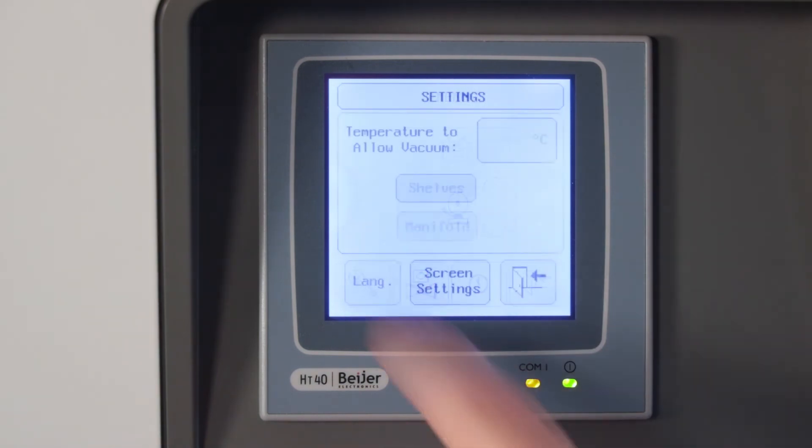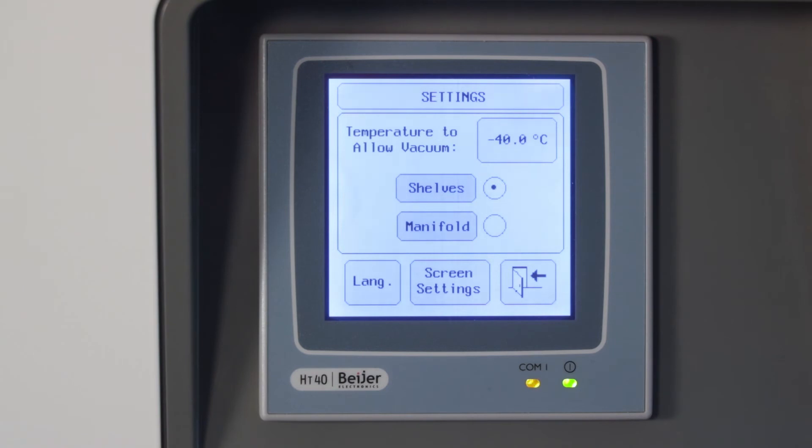Settings screen. You can select the temperature to allow vacuum, shelves, or manifold. You can select language here.